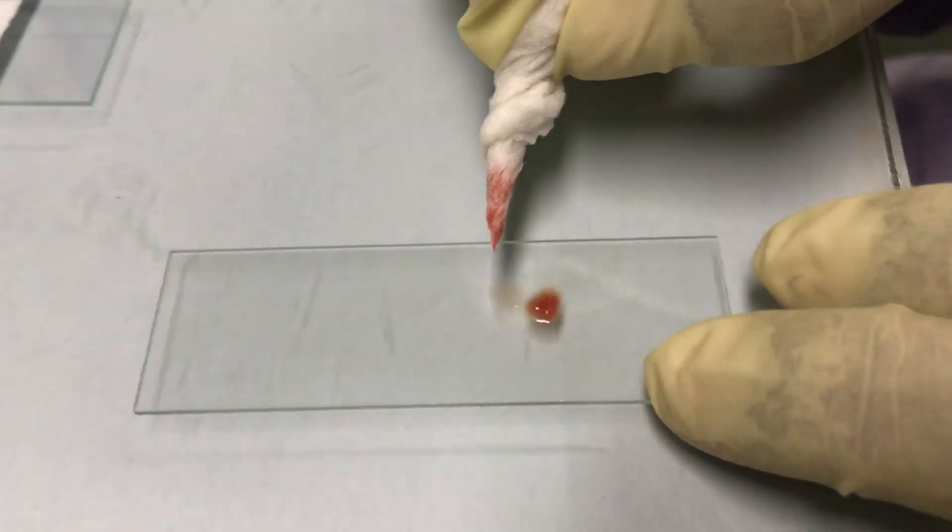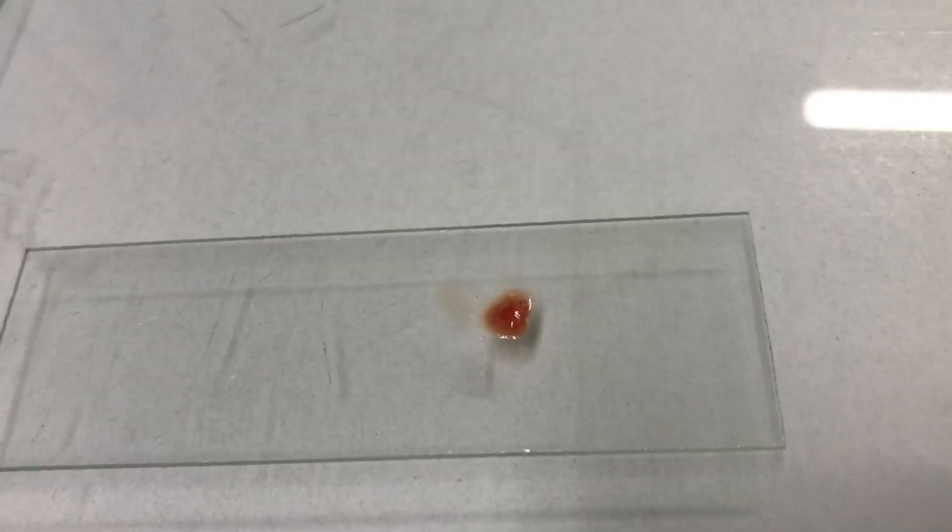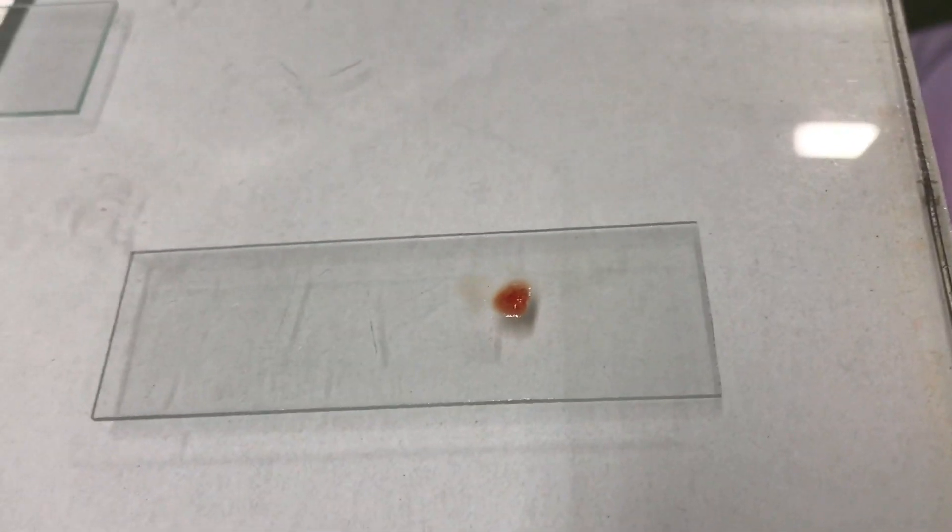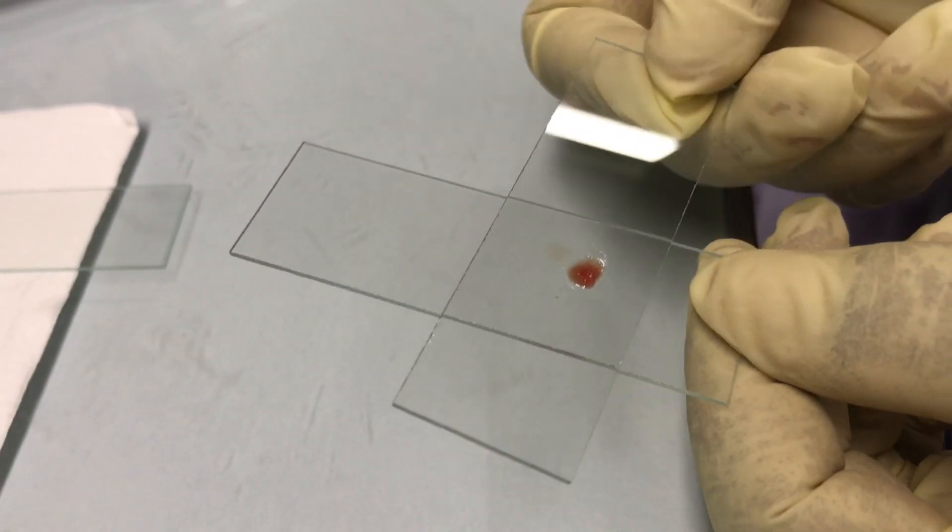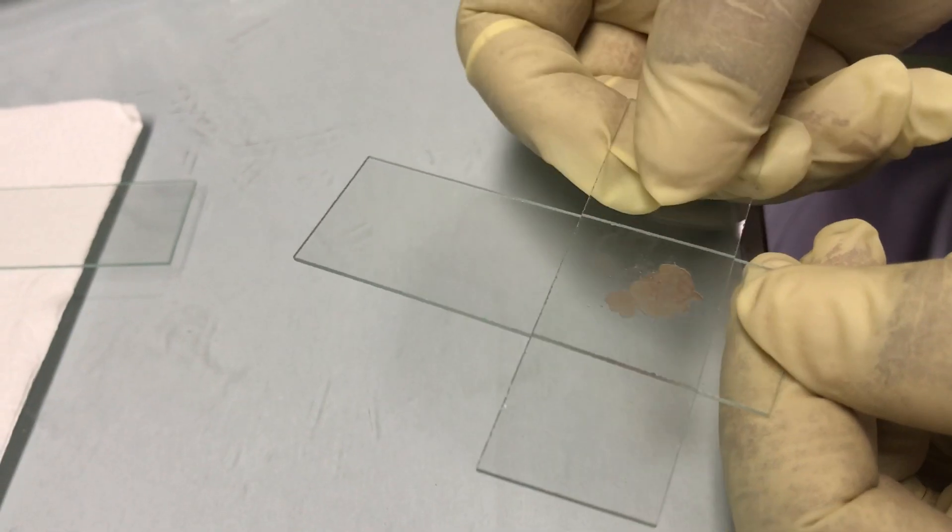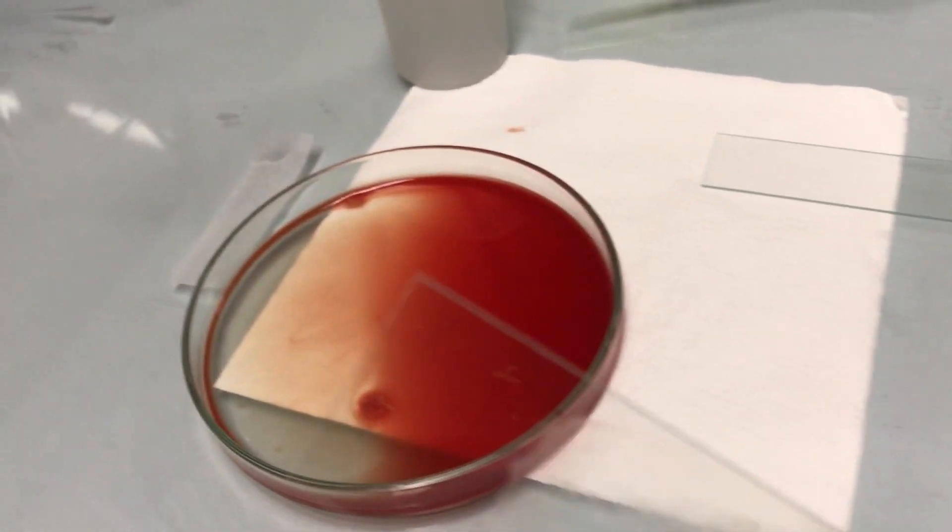Now the glass slide contains only marrow particles. We are using another slide to make a thin smear of marrow particle on the glass slide.